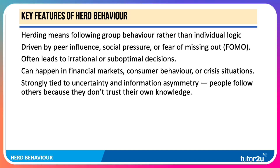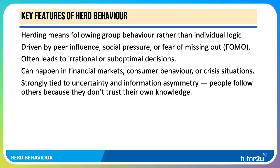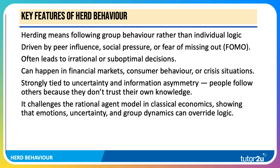Herd behaviour is strongly tied to uncertainty and information asymmetry. Please link this to information failure — people follow others because they don't trust their own knowledge. Herd behaviour does challenge the rational agent model in classical economics, as emotions, uncertainty, and group dynamics can often override and overcome logic.